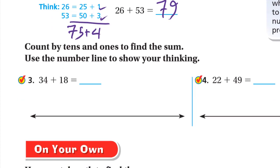Here count by 10 and 1 to find the sum. Use the number line to show your thinking. Here 34 plus 18. I'll start with the bigger number which is 34. So I'll start with 34. We need to add 18. So I'll add 10, then 8. If I added 10, so plus 10, it will be 44. I have to add 8 more.